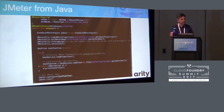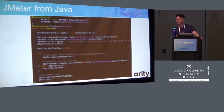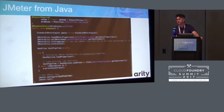An even neater possible solution — assuming the option is available inside your company — is to embed the actual JMeter application inside of a Docker image, push that up, and then do the necessary steps to orchestrate that. I personally haven't done that, so I can't comment on it, but it certainly looks like an easier way to do it.